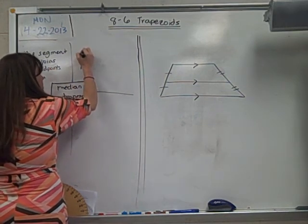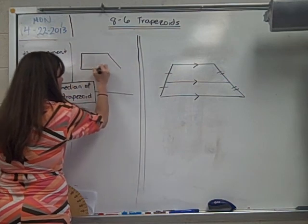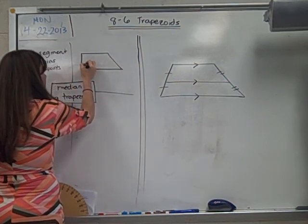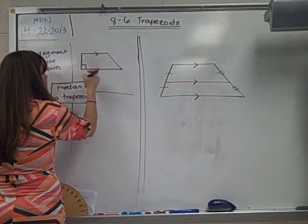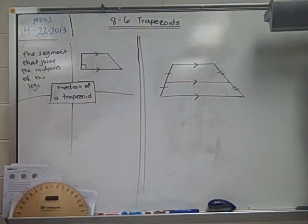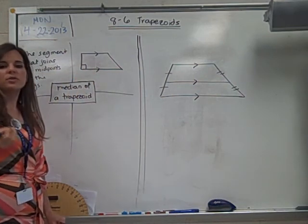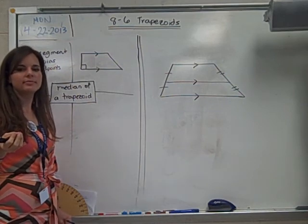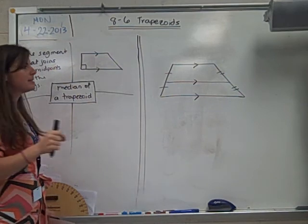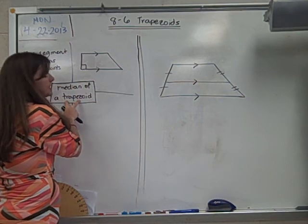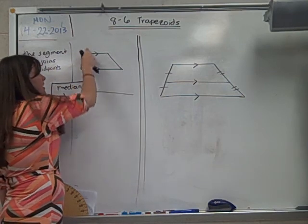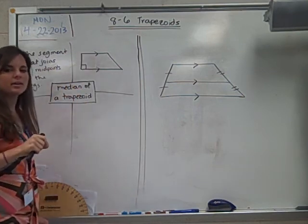I'm going to draw a trapezoid. By the way, if I put 90 degrees there on one side, I could ask you, is this a trapezoid? Your answer to that is yes, because the only thing it takes to make a trapezoid is exactly one set of parallel lines.